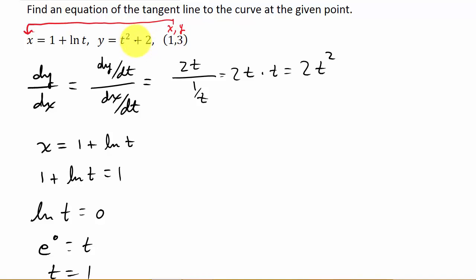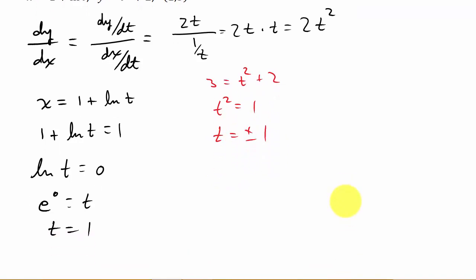Now, we could have taken this one also and set it equal to 3. And just to show you real quick, if we would have set this equal to 3, we would have gotten 3 equals t squared plus 2. So t squared is equal to 1. So we get t is plus or minus 1. So you can see we get the positive 1 here, but we also get this negative 1.